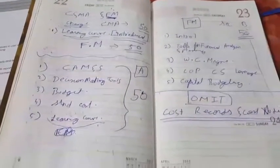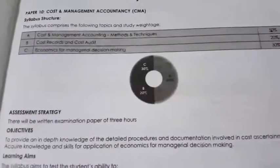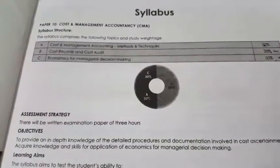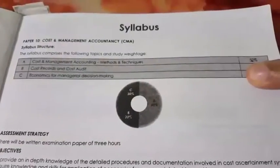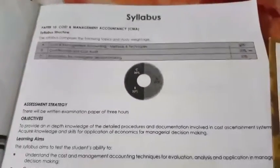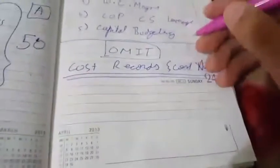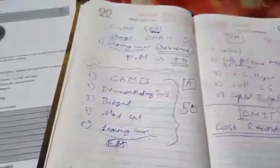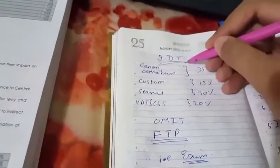So one key change is that learning curve has been introduced. Also, cost records and cost audit, which was there for 20 marks, has been completely abolished, along with economics. Now only Cost and Management Accounting at 50 marks and Financial Management at 50 marks remain. Cost records and cost audit will not appear in the 2016 syllabus.